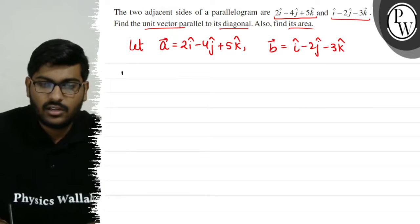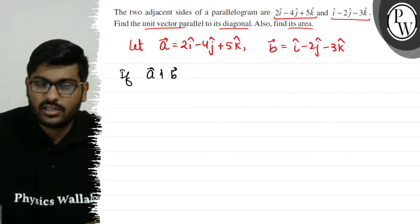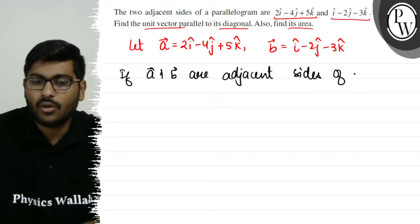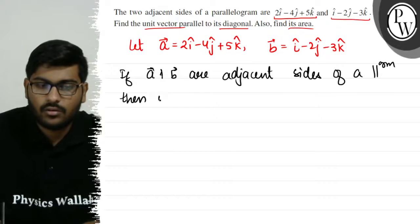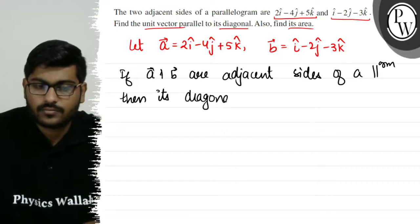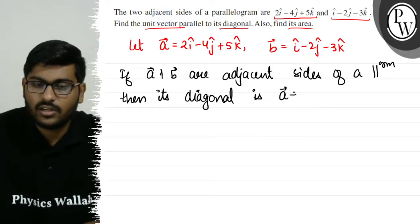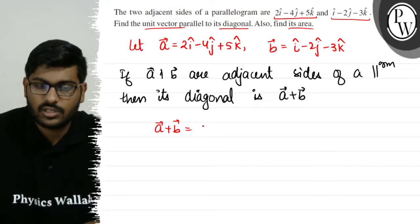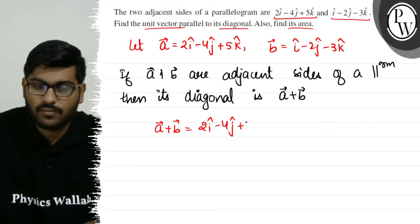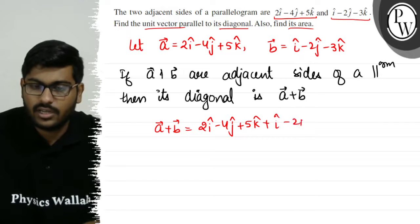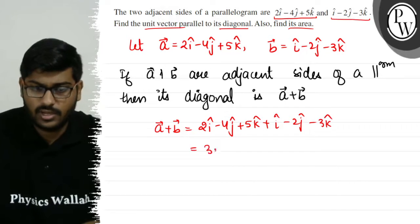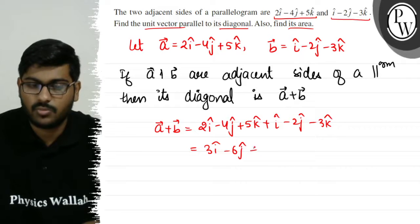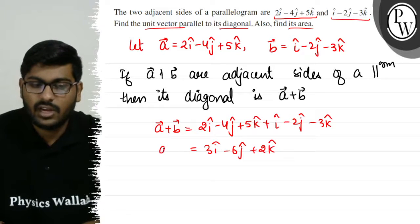Now we know that if A vector and B vector are adjacent sides, then its diagonal is A vector plus B vector. So the diagonal equals 2i-cap minus 4j-cap plus 5k-cap plus i-cap minus 2j-cap minus 3k-cap. 2i-cap plus i-cap is 3i-cap, minus 4j-cap minus 2j-cap is minus 6j-cap, 5k-cap minus 3k-cap is plus 2k-cap. So we have A vector plus B vector equals 3i-cap minus 6j-cap plus 2k-cap.